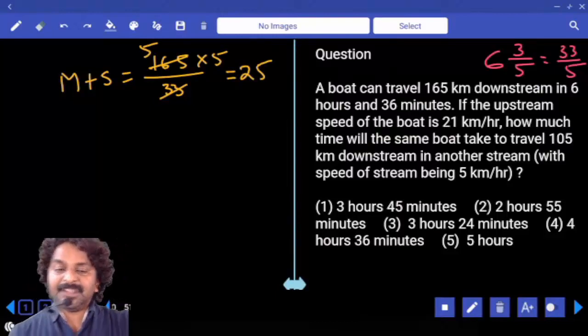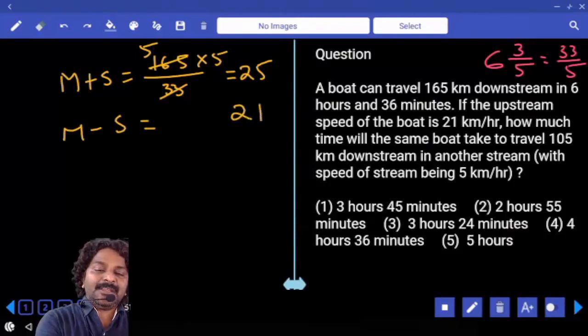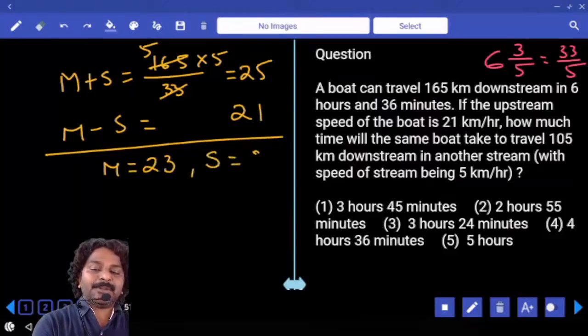If the upstream speed of the boat is 21 kilometers per hour, upstream M minus S equals 21. From this, M value is sum by 2: 23. Stream value is difference by 2: 2.